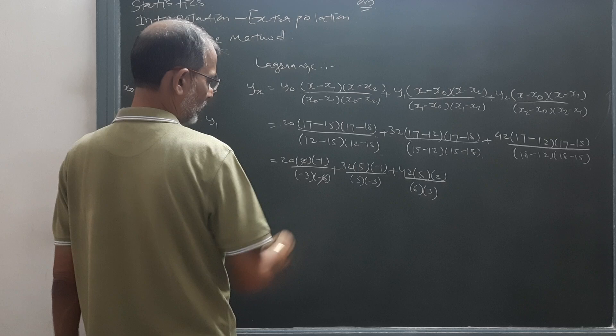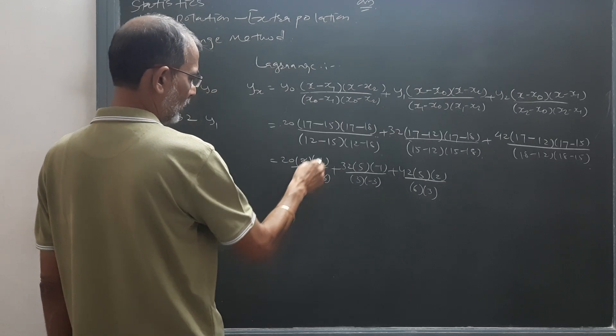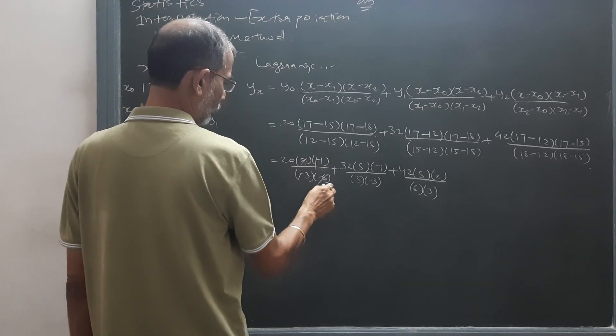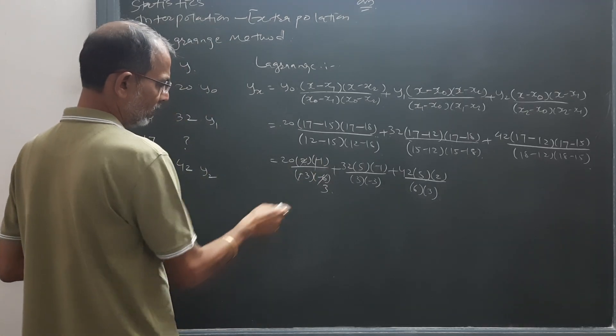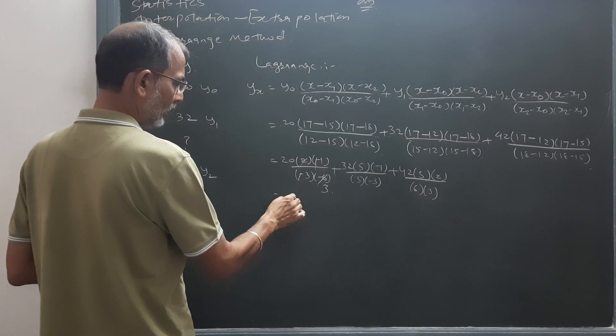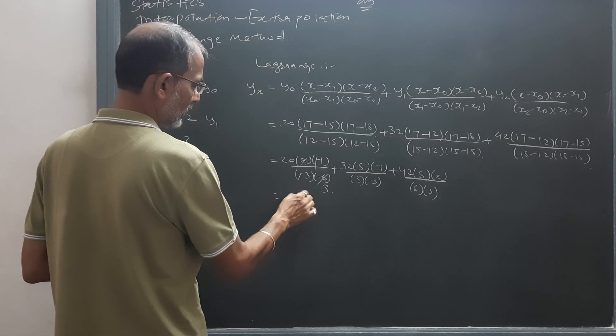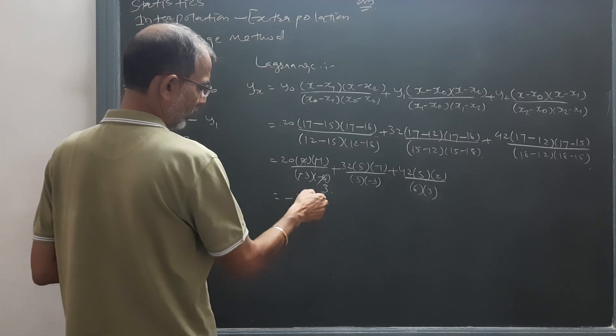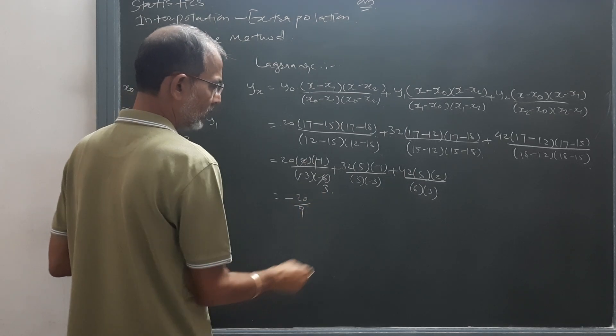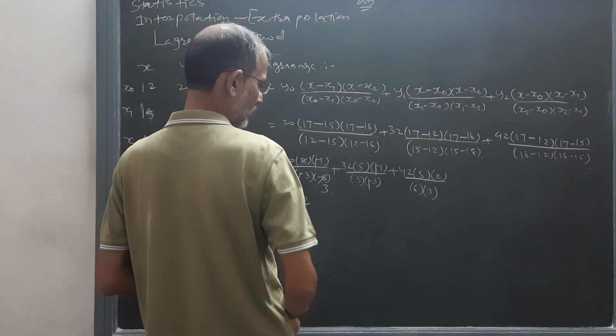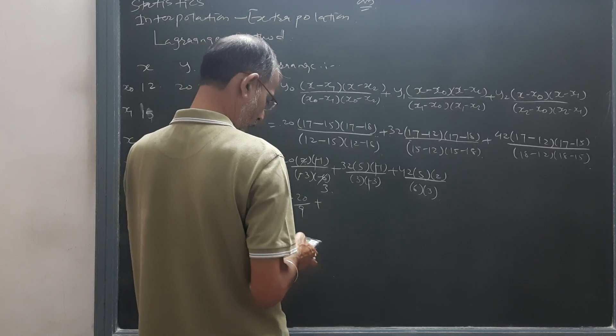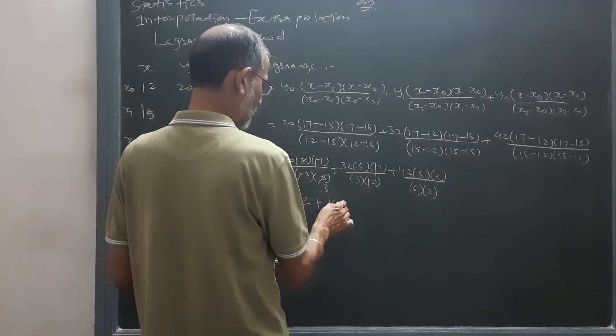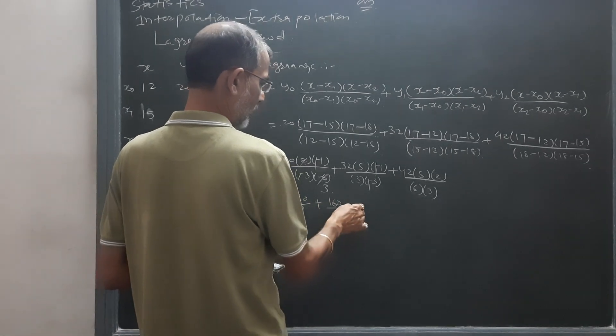2, 3, 6. 2, 3, 6, minus minus cut. 2, 3, 6, minus minus cut. So this will be minus 20 divided by 9. 2, 3, minus minus cut. 160 divided by 9.